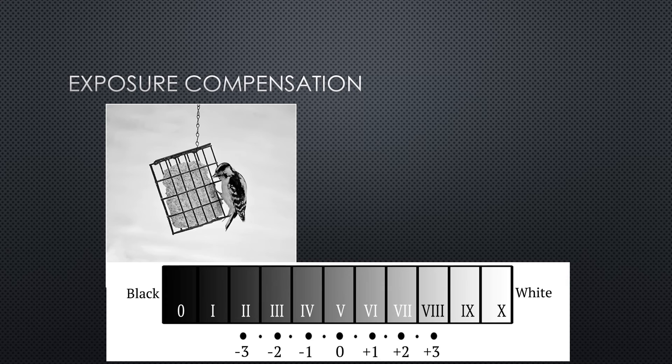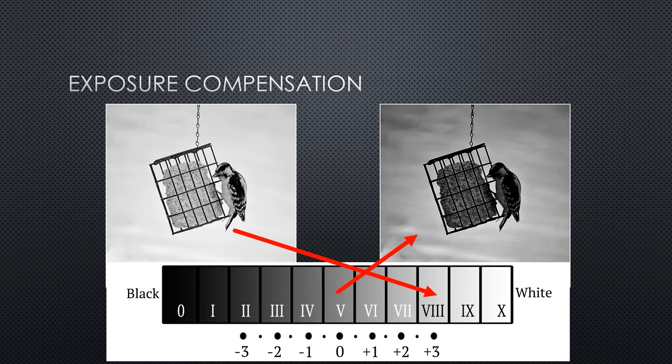Let's take a look at another example. Here we see a downy woodpecker on a feeder with a field of white snow in the background. Looking at the zone system, it's fair to say this scene is definitely brighter than average, probably somewhere around a zone eight. If we let our cameras pick the exposure combination for us, though, it's going to darken the overall image so that it records on the sensor at a zone five, because that's what this light meter is calibrated to do. When we shoot the image at zone five, it's going to be three zones too dark, and as a result, the image gets underexposed.